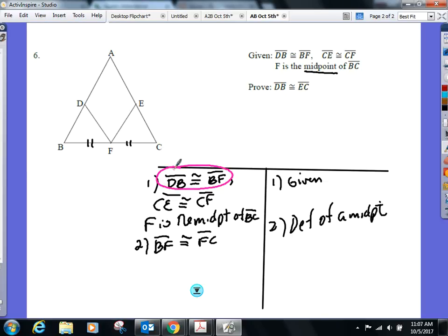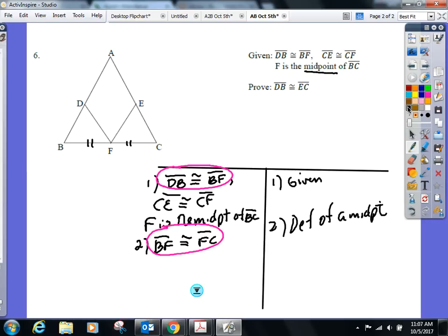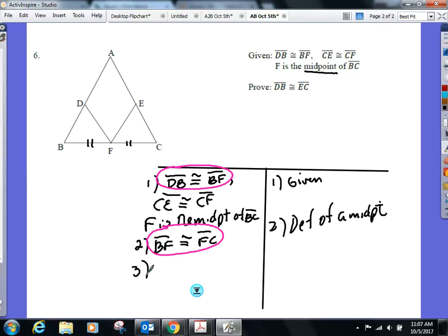DB and BF, BF and FC. Do you see the two line segments that repeat there? So I can use substitution on those two only. I'm not bringing in the third one yet. So if you have DB congruent to BF, BF congruent to FC, which two segments will be congruent? DB congruent to FC. And there is one substitution.